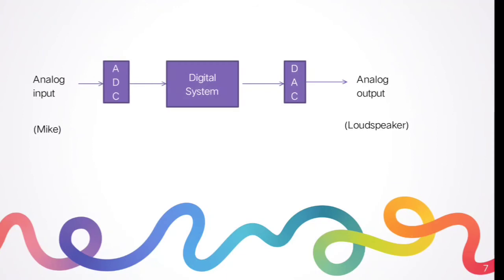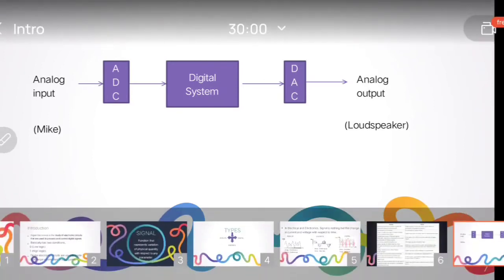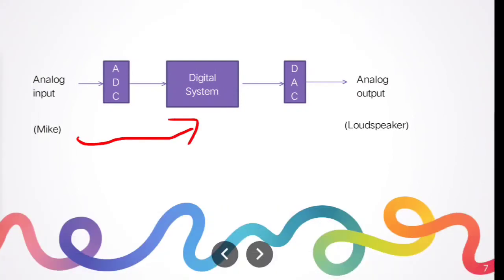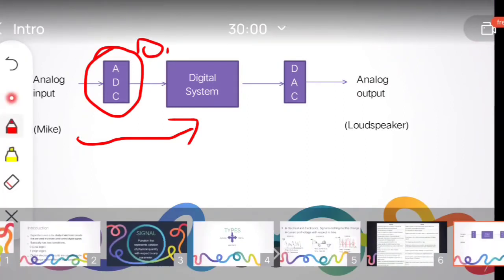This diagram shows typical transmission and reception using a digital system. The concept is to give an analog input to the digital system and receive an analog output. For example, using a microphone for speaking — the voice signal is an analog input to the digital system. When an analog input is fed into the digital system, it must first be converted into digital form using an ADC, which stands for analog-to-digital converter. The voice signal is now converted into zeros and ones.